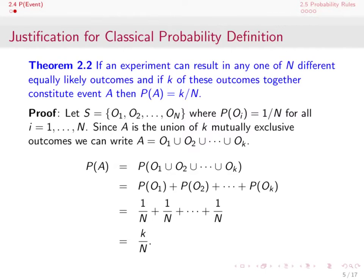Let's prove this. S is our sample space. If the experiment can result in any one of n equally likely outcomes, we label them O1, O2, O3, and so on out to O_n. Since those outcomes are equally likely, the probability of any individual outcome is 1 over N. Since A consists of k outcomes, we write A as the union O1 union O2 union ... union O_k.